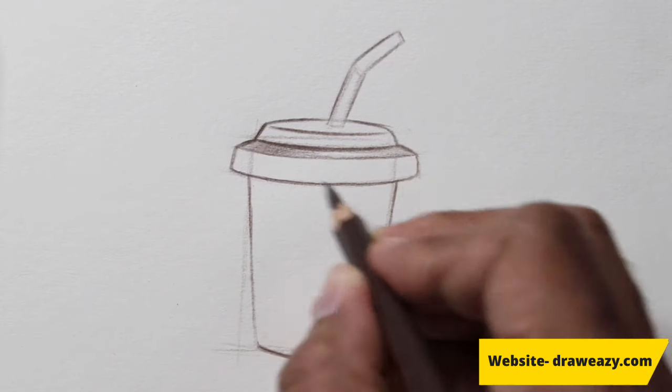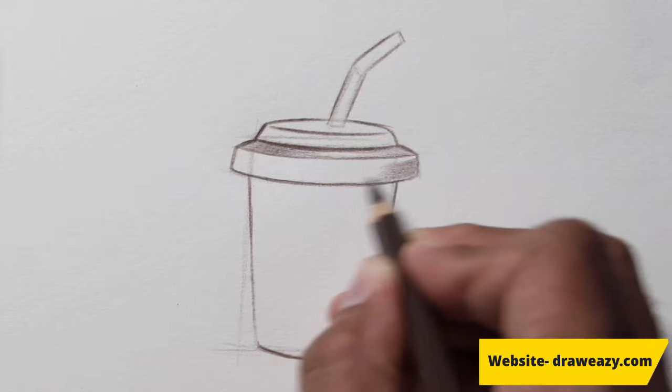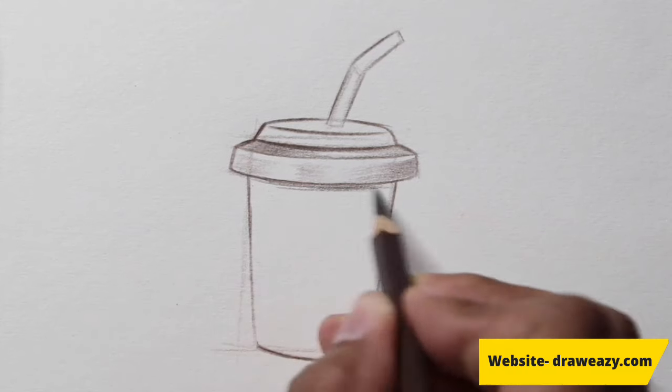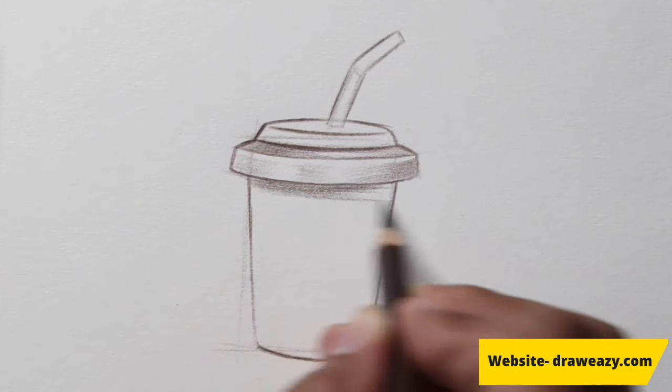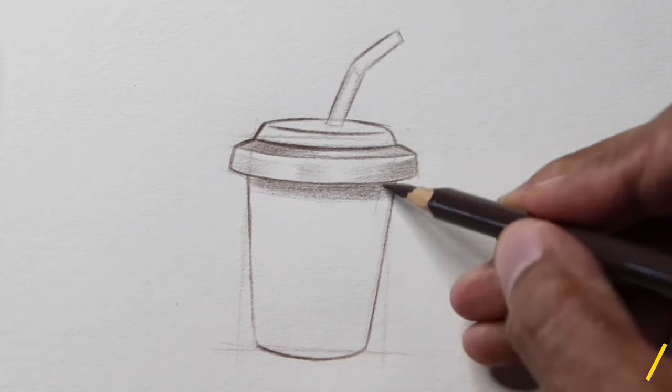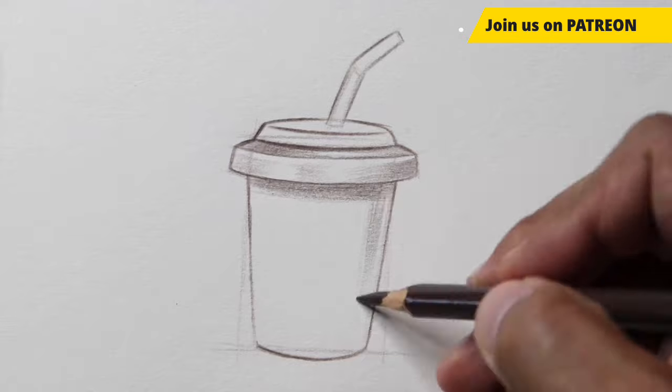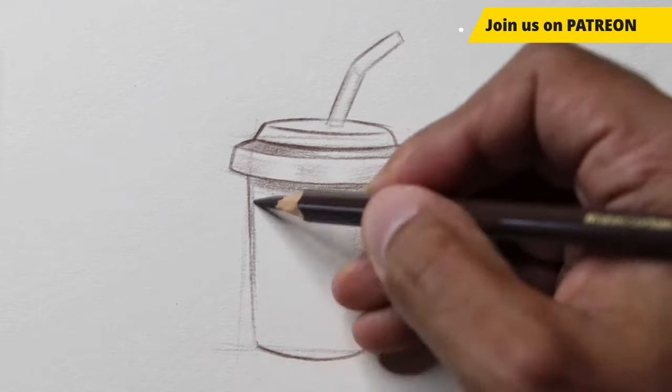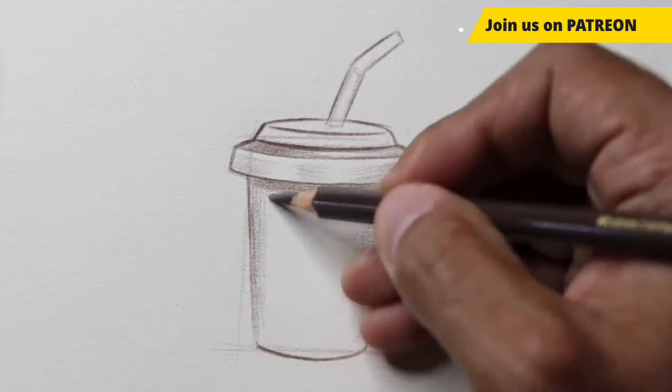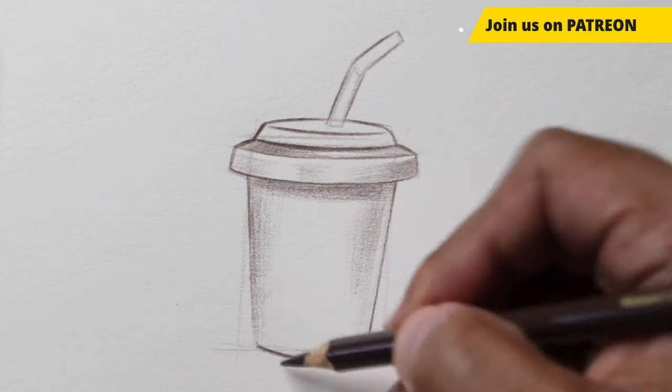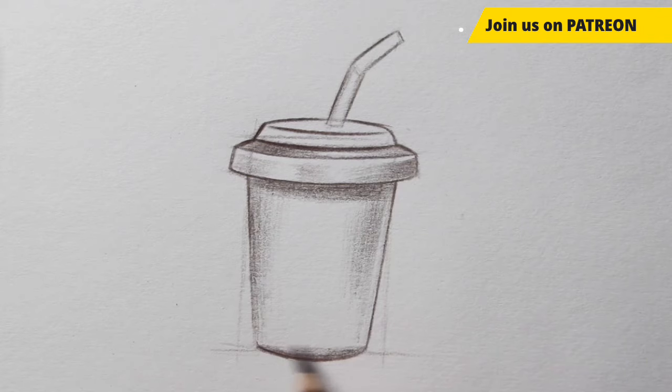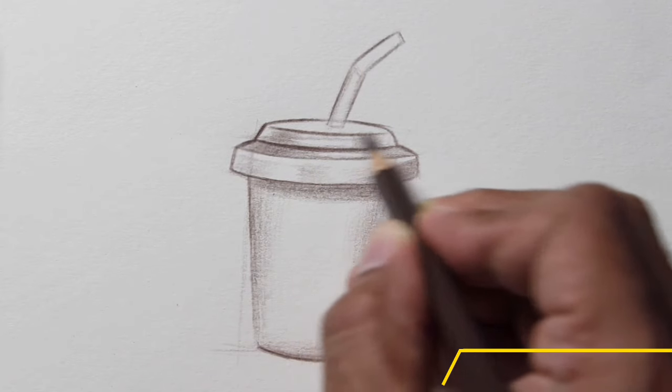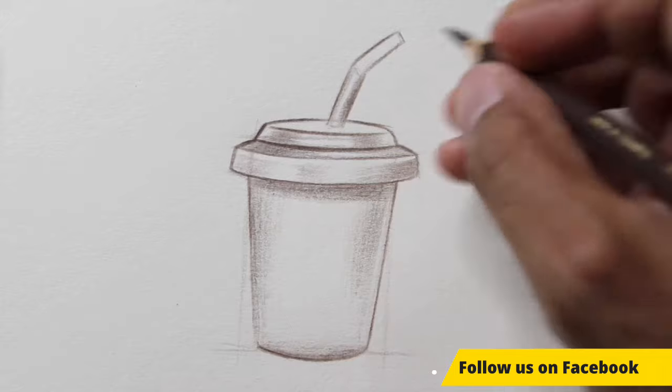Add a bit of shading to the upper portion and sides of the cup to create depth. Lightly shade the straw to give it a realistic look.